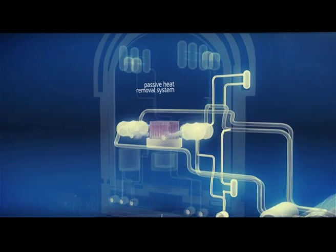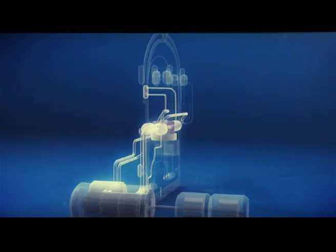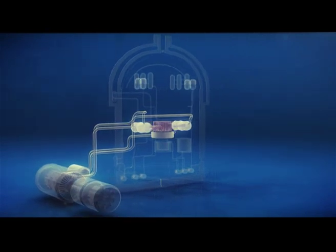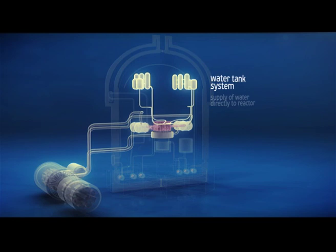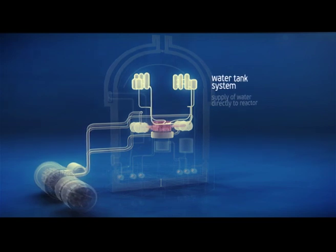If loss of power coincided with a break of the primary circuit, cooling water should be supplied directly to the reactor. This function is performed by a system of water tanks capable of supplying water to the reactor during a long period of time.